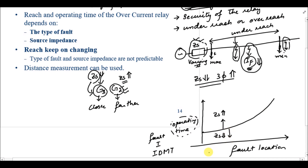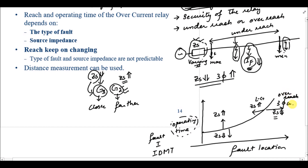For a line-to-ground fault when ZS is increased, the relay will underreach and the graph shifts in the underreach direction. But if a three-phase fault occurs with a smaller ZS — since a three-phase fault is already severe and ZS is decreased — the fault current further increases, so the curve shifts in the direction opposite to the y-axis. This is the overreach condition.